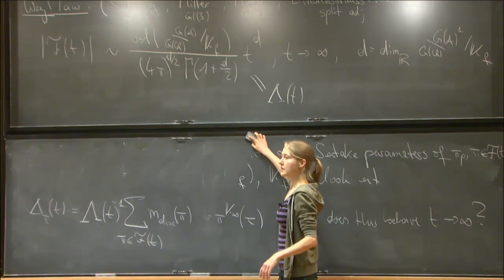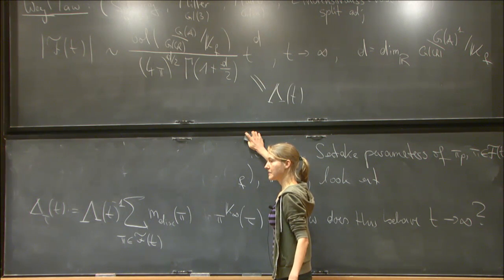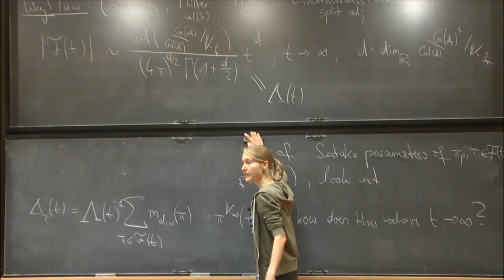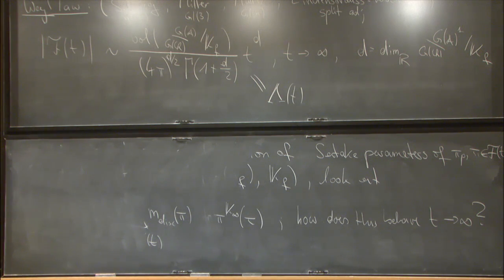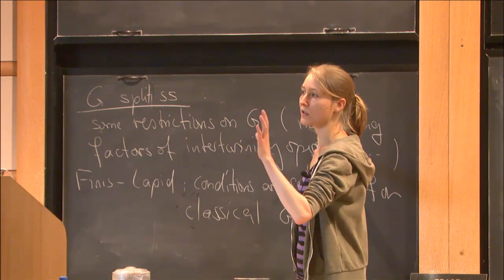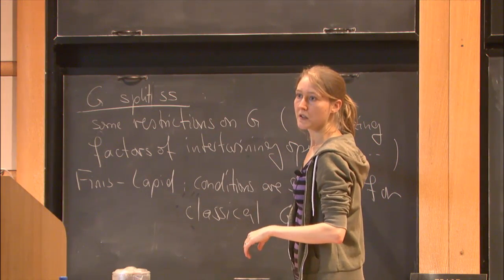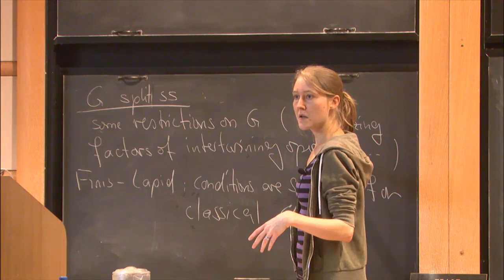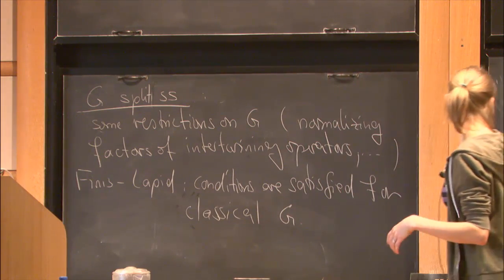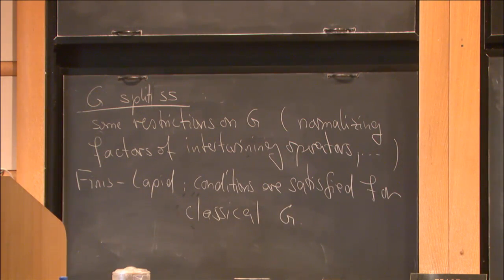One of the restrictions here is that we want an upper bound on the intertwining numbers. We have an upper bound in terms of log of T plus the infinitesimal character. You can prove it for GLN, but in general this is more difficult. Mueller even on the residual got a very poor bound for that. This is why we impose those restrictions on G — to handle the spectral side.